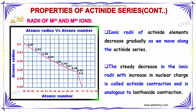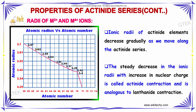Radii of M3+ and M4+ ions: The ionic radii of actinide elements decreases gradually as we move along the actinide series. The steady decrease in ionic radii with the increase in nuclear charge is called actinide contraction, and it is analogous to the lanthanide contraction.